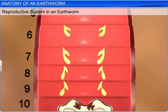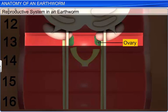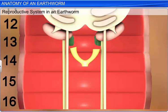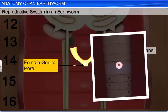The female reproductive system consists of a pair of ovaries present on the intersegmental septum of the 12th and 13th segments. Below the ovaries are the ovarian funnels, which continue into the oviduct and join to form a single female genital pore on the 14th segment.